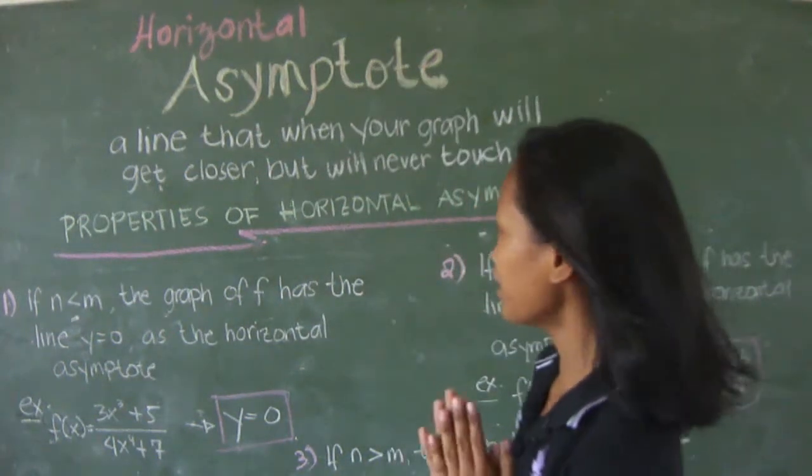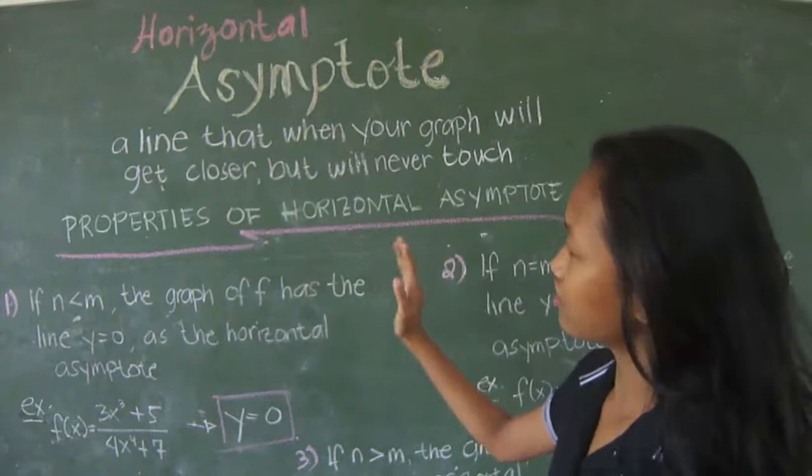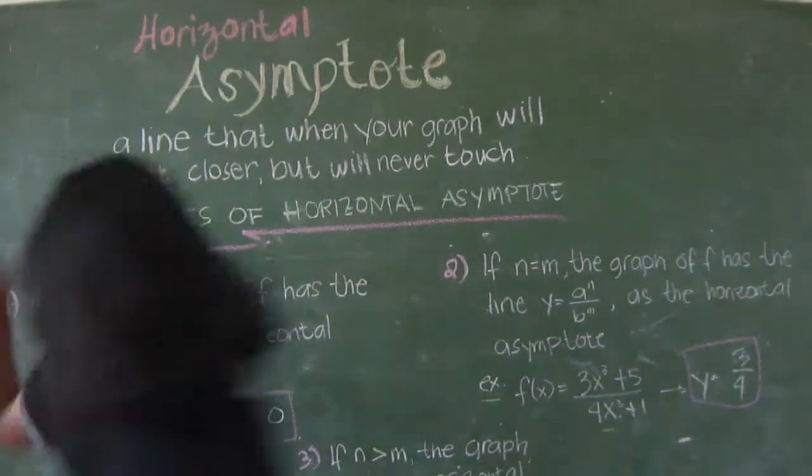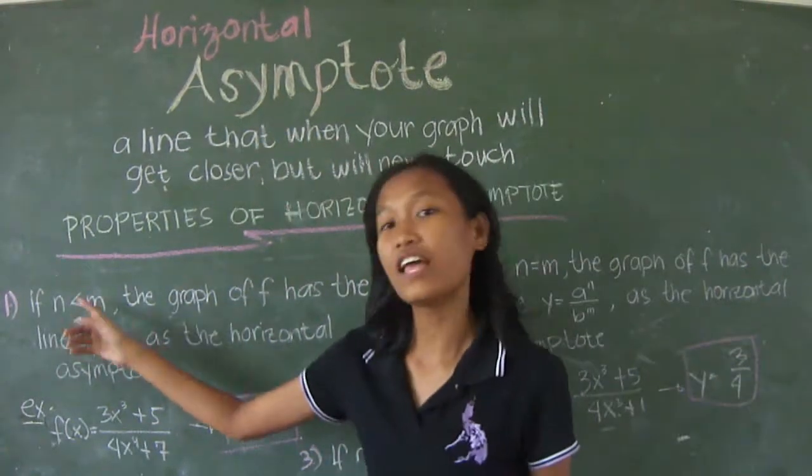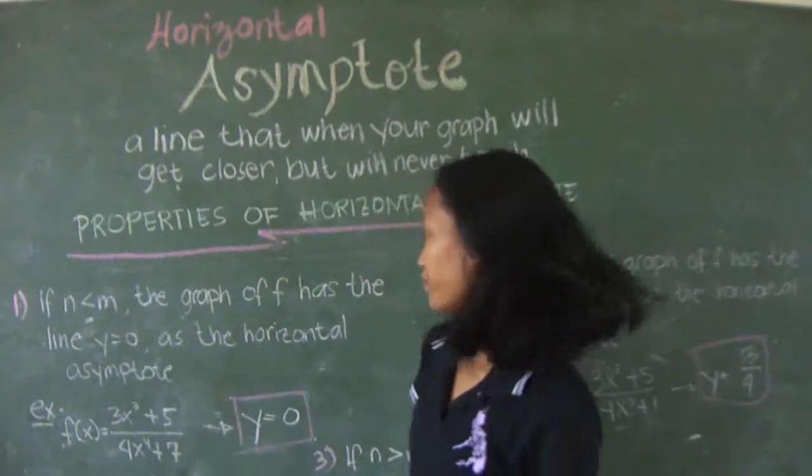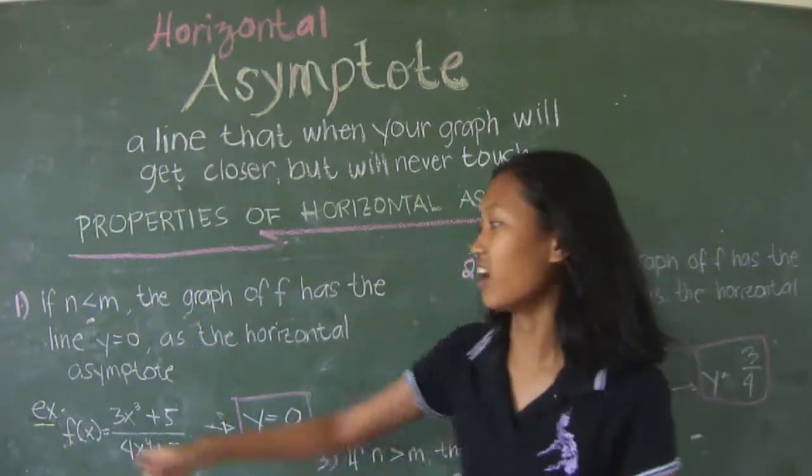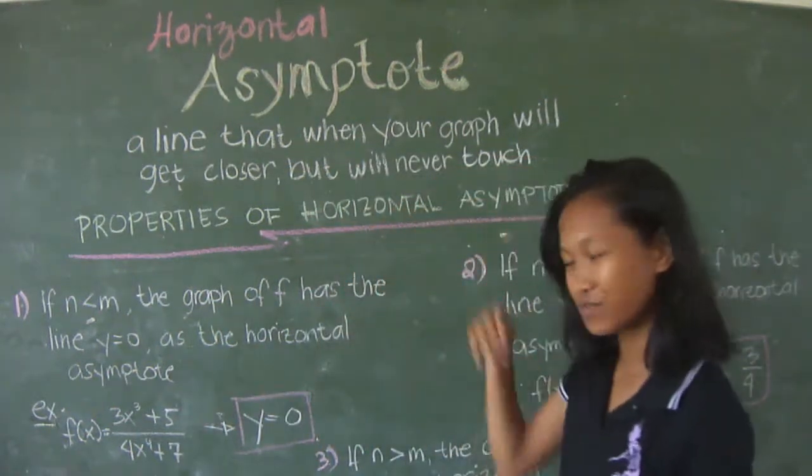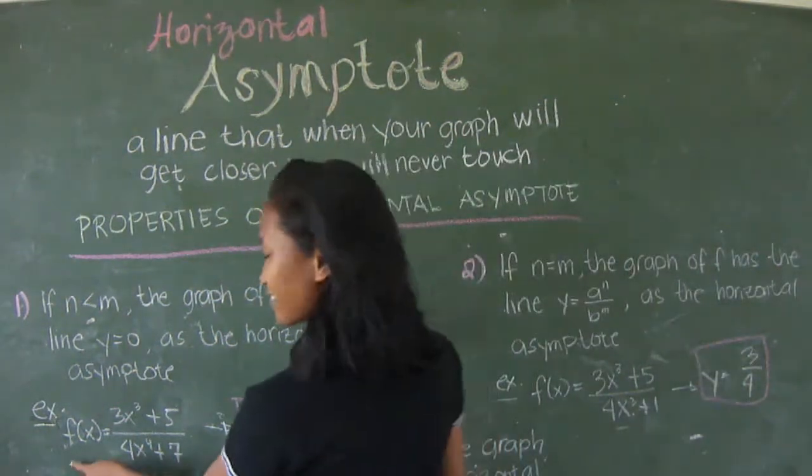Here are the properties of horizontal asymptote. So first, if n is less than m, the graph of f has the line y equals 0 as the horizontal asymptote.